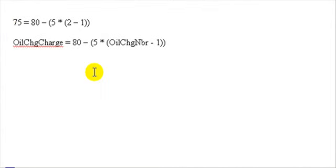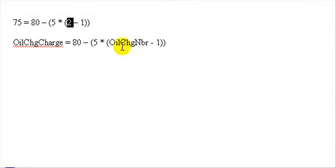We will substitute variable names into this expression — for instance, replacing 75 with 'oil change charge' and replacing the 2 with 'oil change number.' When the user enters 4, oil change number would be put in as 4 minus 1 is 3 times 5 is 15 from 80. We can then amend oil change number to do all the different charges for all the oil changes chosen, using one equation.